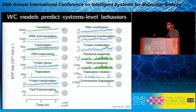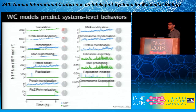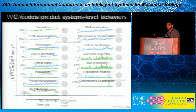Perhaps more interestingly, we can use wholesale models to predict a variety of systems-level behaviors. This slide indicates the ATP in blue and the GTP in green usage of the highest energy-consuming processes throughout the in silico life cycle of one cell. We've analyzed this information to get insights into how cells are allocating energy across pathways over time and throughout the cell cycle.